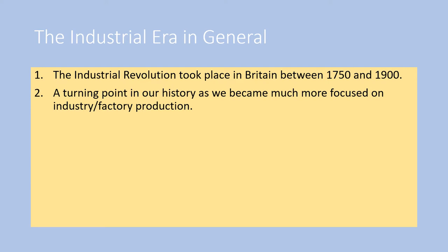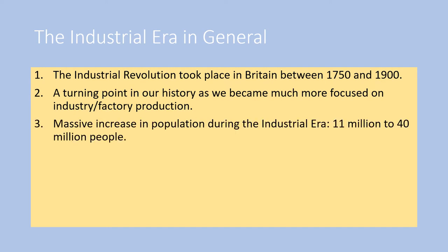In Britain at this time we become much more focused on industrial and factory production. Not only that, but the products they make aren't just sold in Britain — they are sold around the world. The early period of the industrial era is when we are involved in the transatlantic slave trade, and the fabric industry is absolutely huge. In Great Britain, we have a massive increase in population from 11 million people at the beginning to 40 million people at the end.